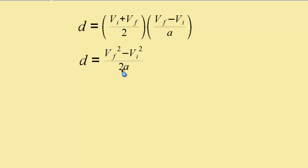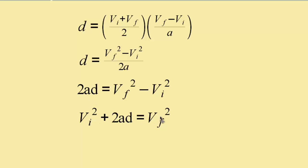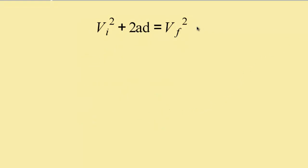Now I want to get 2a out of the denominator, so I multiply both sides by 2a. That gives us 2ad equals final velocity squared minus initial velocity squared. Then, if I add initial velocity squared to both sides, I get initial velocity squared plus 2ad equals final velocity squared. And we're almost there.